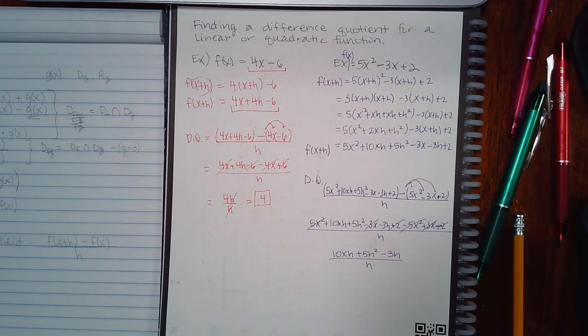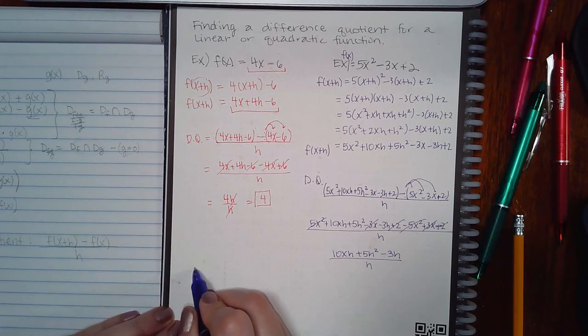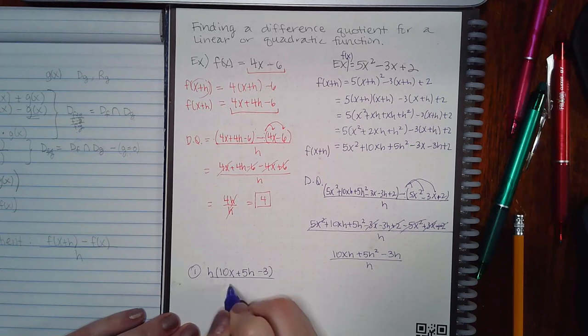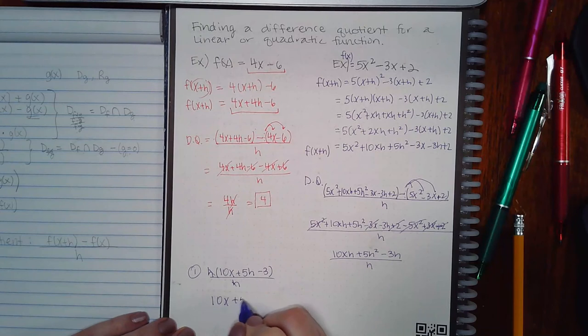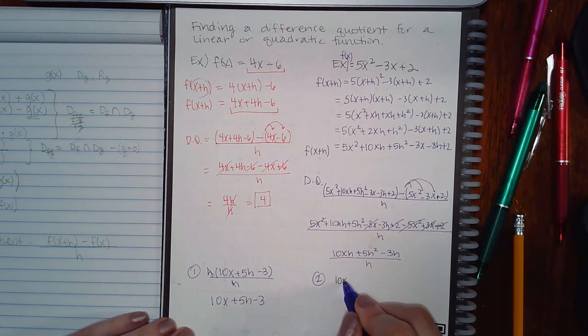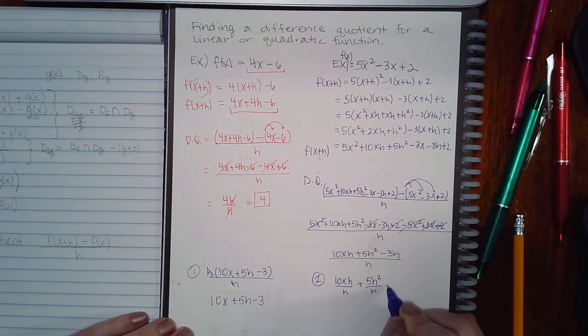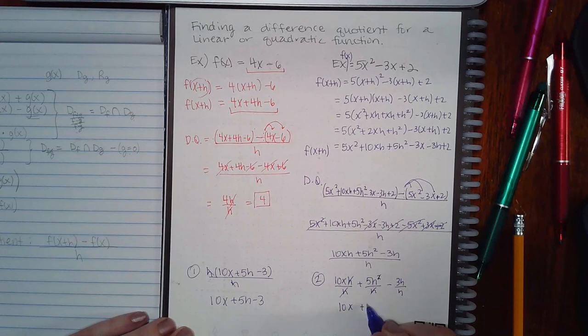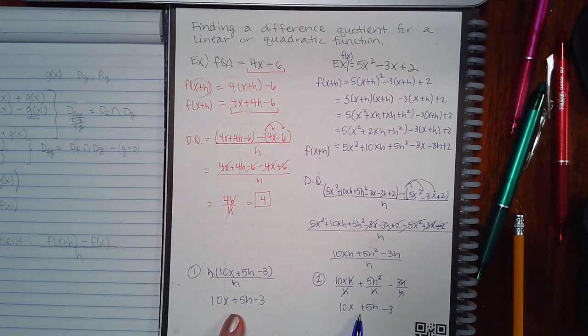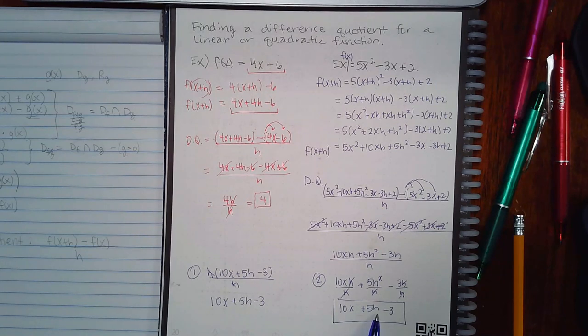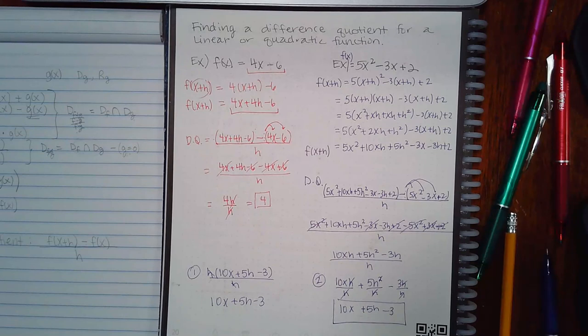And either one of them is correct and either both of them will give you the same answer. So one way to simplify this is to factor out the common factor, which is h. And then the h's will reduce, giving you 10x plus 5h minus three. The other way to simplify that is to take each term in the numerator and put it over the denominator individually. And then simplify each fraction individually. In any case, you end up with the same exact expression. So this is still the answer. Notice that it still has h's and it still has x's in it. And that is okay. All they want you to do is simplify as much as possible, even if it doesn't simplify all the way down to a number.